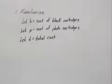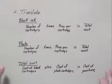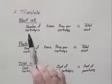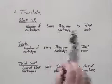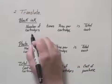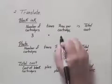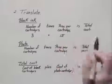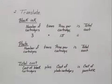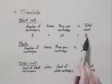Now when we move to step two, the translate step, we actually have three statements to translate. For the black ink we have to translate the statement: the number of cartridges times the price per cartridge is the total cost. The number of cartridges was three times the price per cartridge was $15, and that equals the total cost of the black cartridges, which we said was B. That gives us one equation.